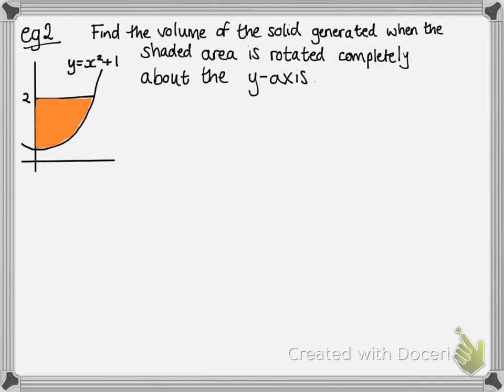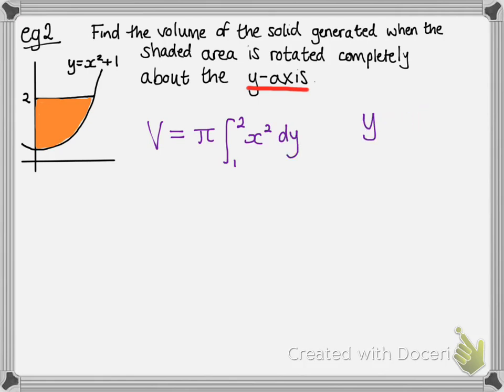Here's our second example, which is a little bit different. This time: find the volume of the solid generated when the shaded area is rotated completely about the y-axis. So instead of y² dx, we use x² dy — it's the same formula but we're reversing the axis. Instead of going around the x-axis we're going around the y-axis, so we just switch all our x's and y's. It works by the same principle of thin slices through the solid. We're now doing π∫x² dy, integrating with respect to y.